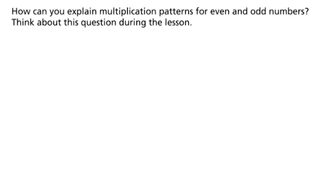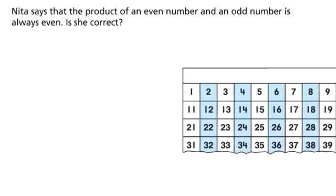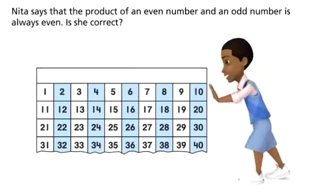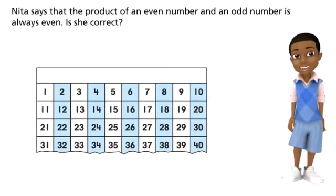How can you explain multiplication patterns for even and odd numbers? Think about this question during the lesson. Nina says that the product of an even number and an odd number is always even. Is she correct?